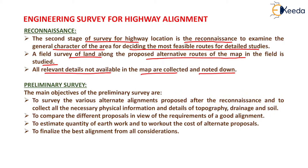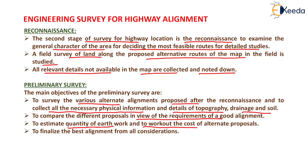The next type of survey is the preliminary survey. The main objectives of the preliminary survey are to survey the various alternate alignments proposed after the reconnaissance, and to collect all the necessary physical information and details of topography, drainage and soil. To compare the different proposals in view of the requirements of a good alignment, to estimate the quantity of earthwork, and to work out the cost of alternate proposals to finalize the best alignment. In preliminary survey, topographic features, change survey, leveling work, traffic survey, drainage study, soil investigation, etc. are done.